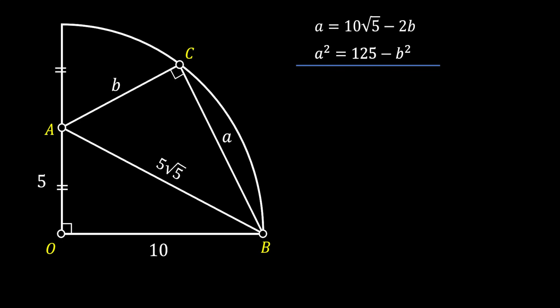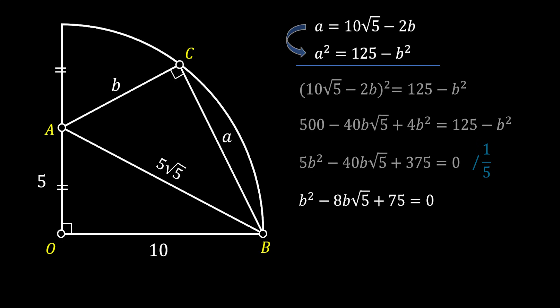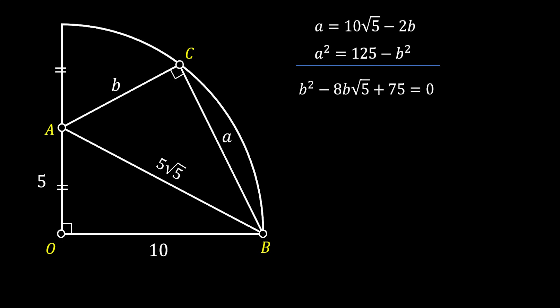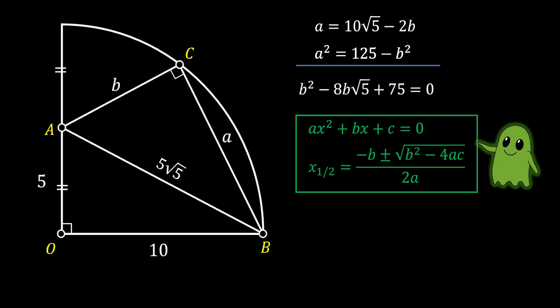Now we solve this system of equations. Substituting the expression for a into the second equation, expanding using the square of a binomial, and dividing each term by 5, we arrive at a quadratic equation. To solve it I'll use the quadratic formula: for ax² + bx + c = 0, x = (−b ± √(b²−4ac)) / 2a. In our case a = 1, b = −8√5, and c = 75.